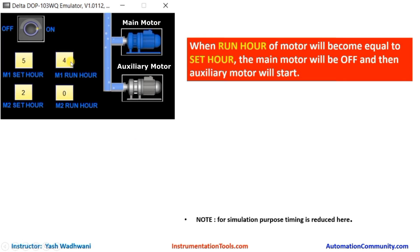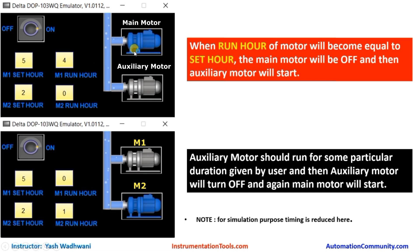When the running hours of the main motor become equal to the set hour given by the user, the main motor will turn off and the auxiliary motor will start. The running hour of the main motor will become 0, because next time it should start from 0, and the running hour of the auxiliary motor is started. It will remain on until the running hour of the auxiliary motor equals the set hour of the auxiliary motor. After that, the main motor will start again.